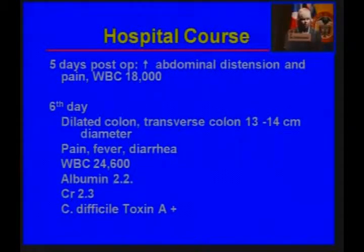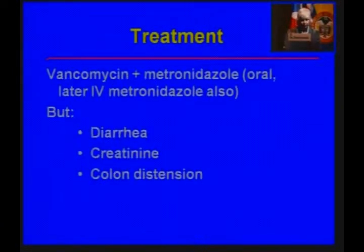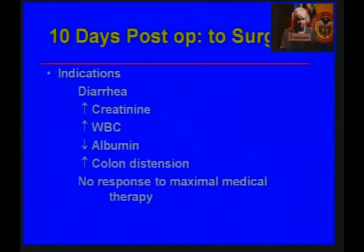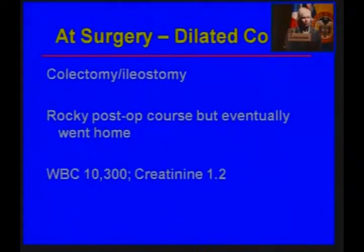He had pain, fever, and diarrhea. The white count went up to 24,000, his albumin dropped to 2.2, his creatinine went up to 2.3, and he did have toxin A in his stools. He was treated with vancomycin and originally oral metronidazole, but this was later switched to IV metronidazole. He still had diarrhea and elevated creatinine, his colon was still distended, so the surgeons took him back to surgery and took out the other half of his colon. He had a rocky postoperative course but eventually went home with his white count back near normal and creatinine back to baseline.